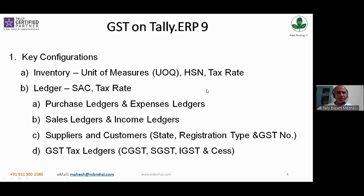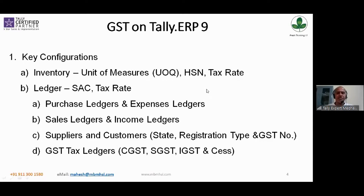Suresh, since the dispatch address is Chennai, the customer will also have a Chennai-registered GST number. You need to take the Chennai GST number for them. You should not bill against the Karnataka GST number of the customer. You need to take the customer's Tamil Nadu GST registration and bill against that and mark it as IGST. Bill-to will be the Karnataka address with Karnataka GST number, and ship-to will be the Chennai address with Chennai GST number.